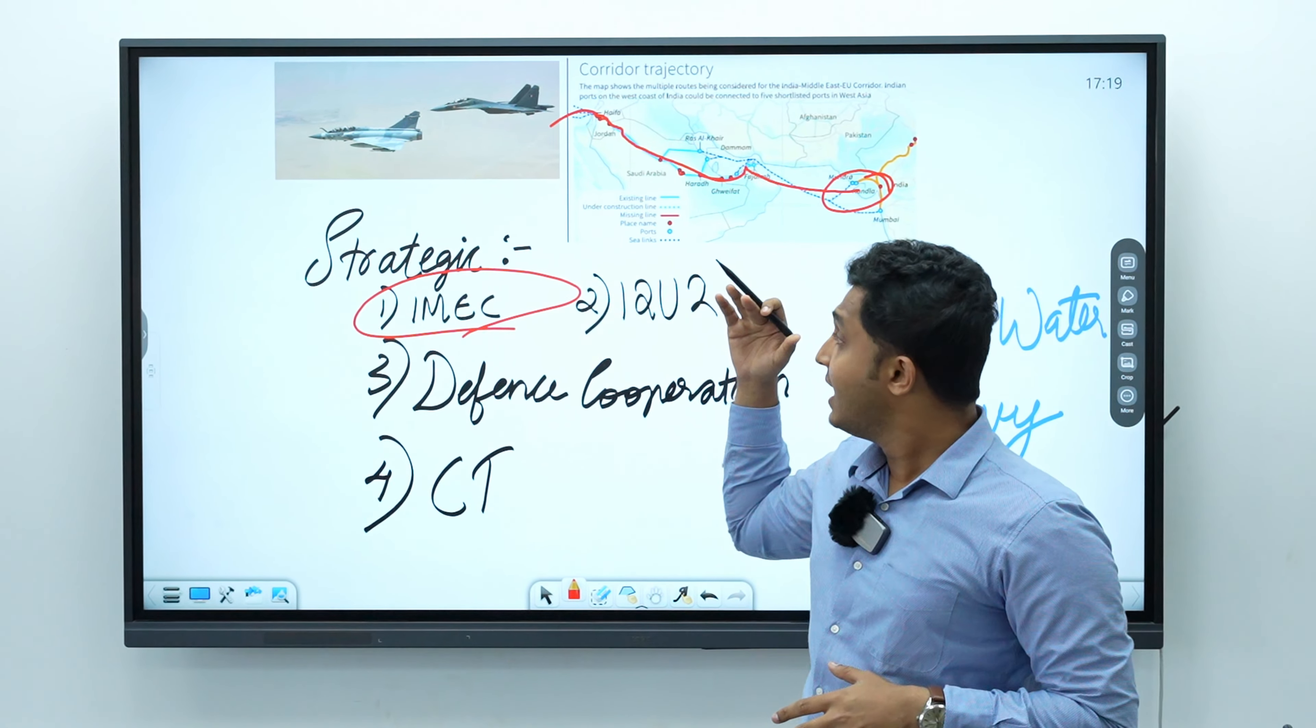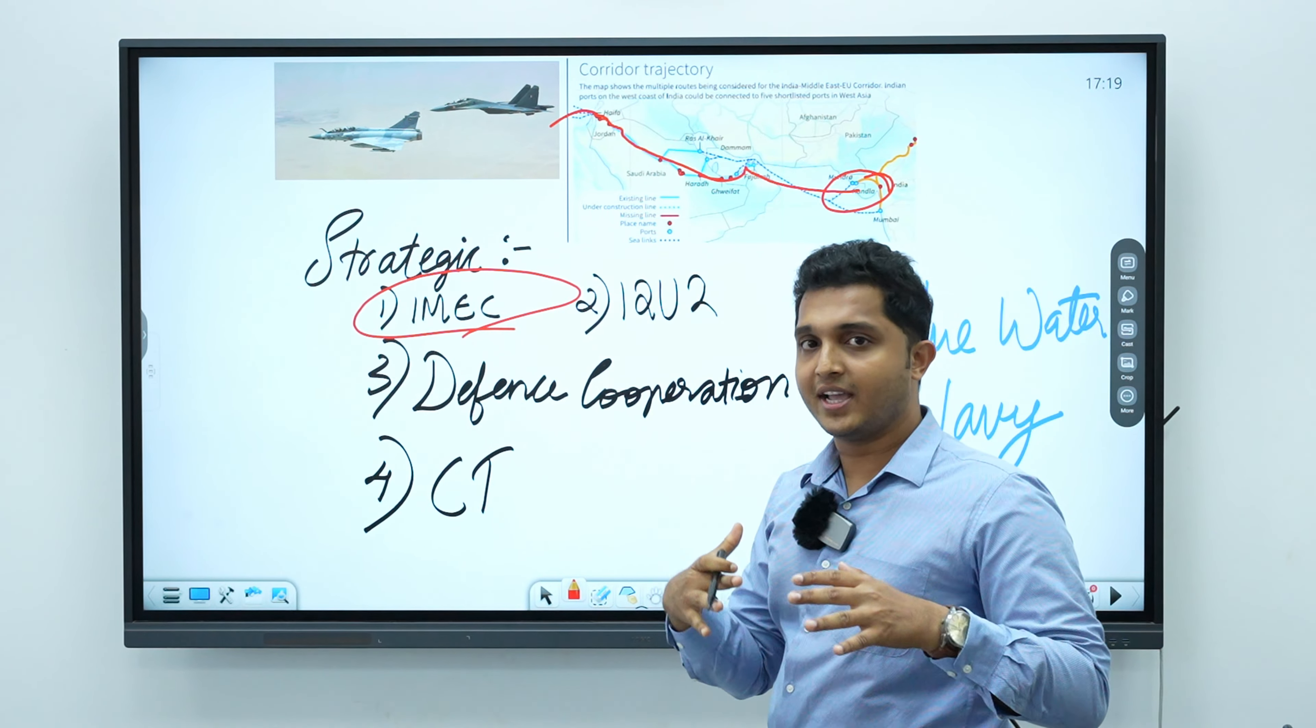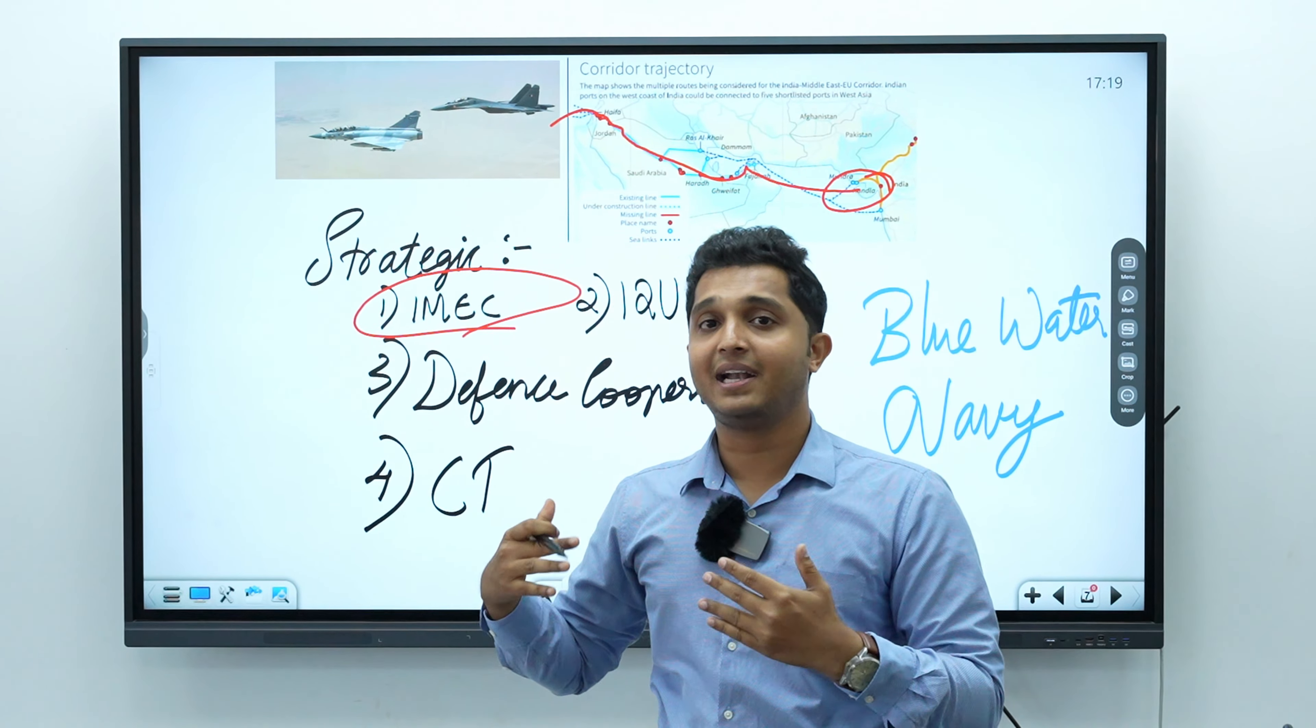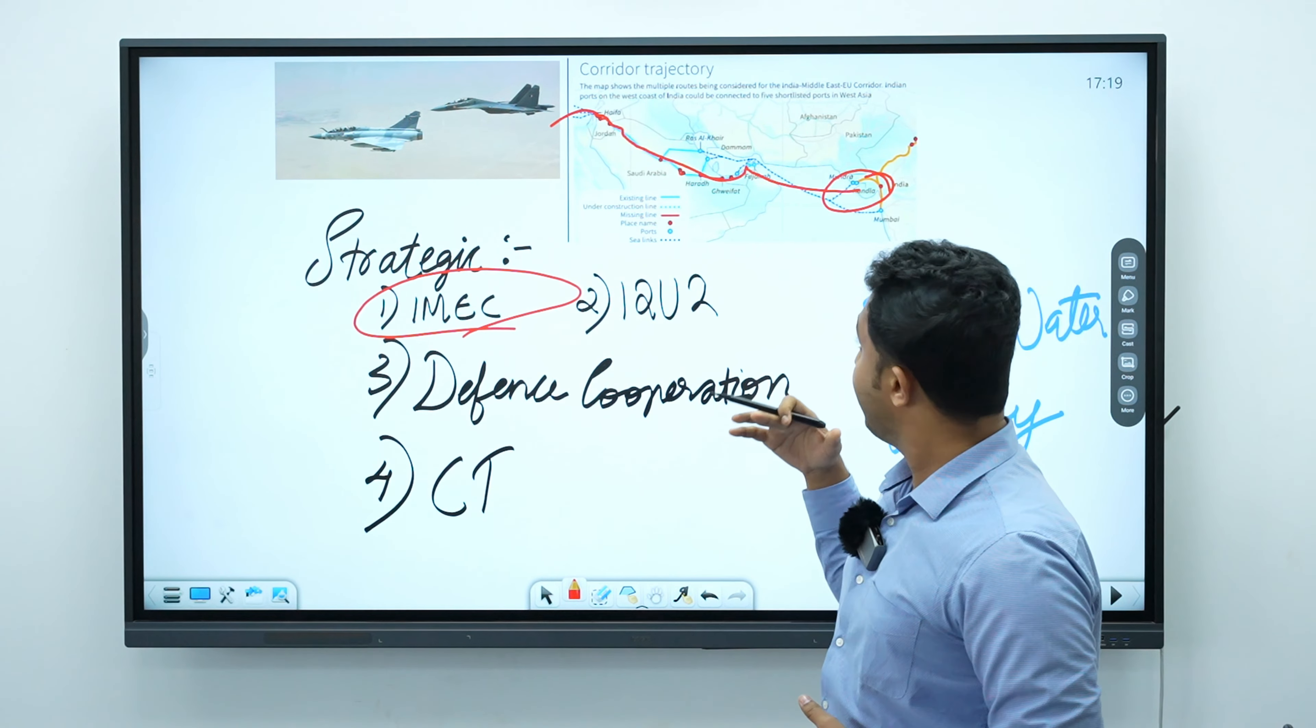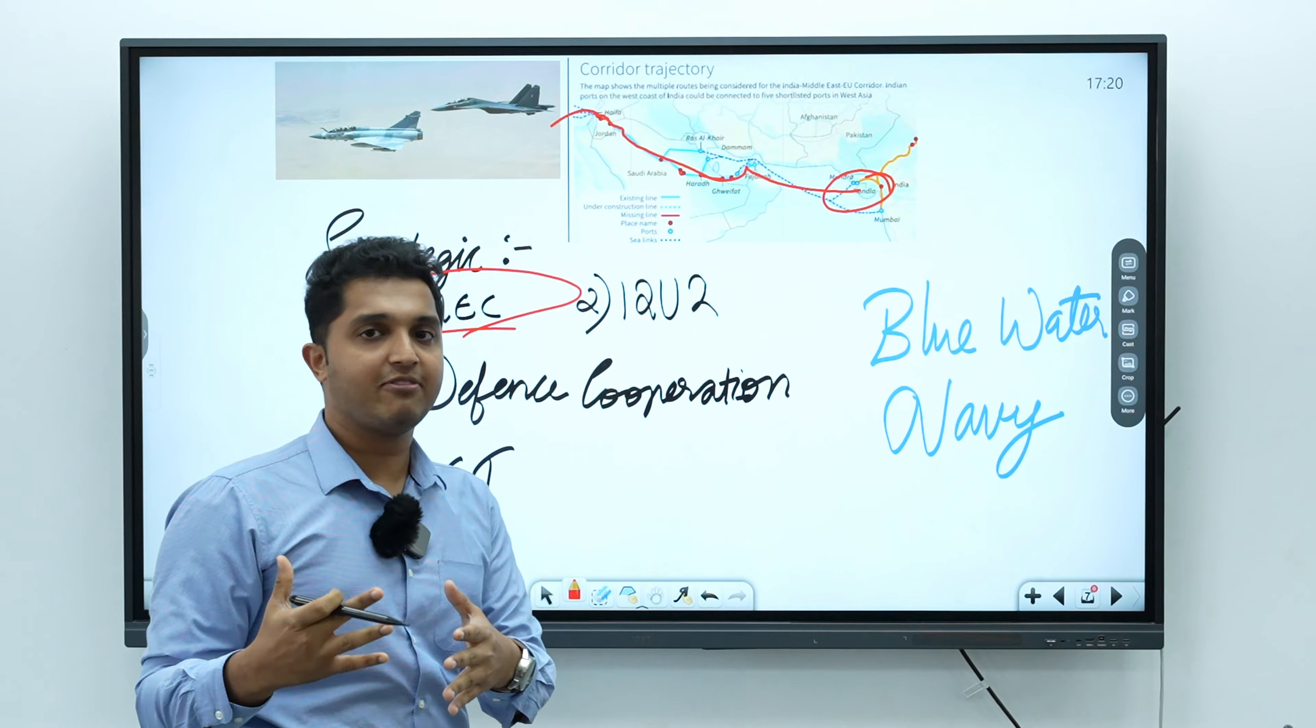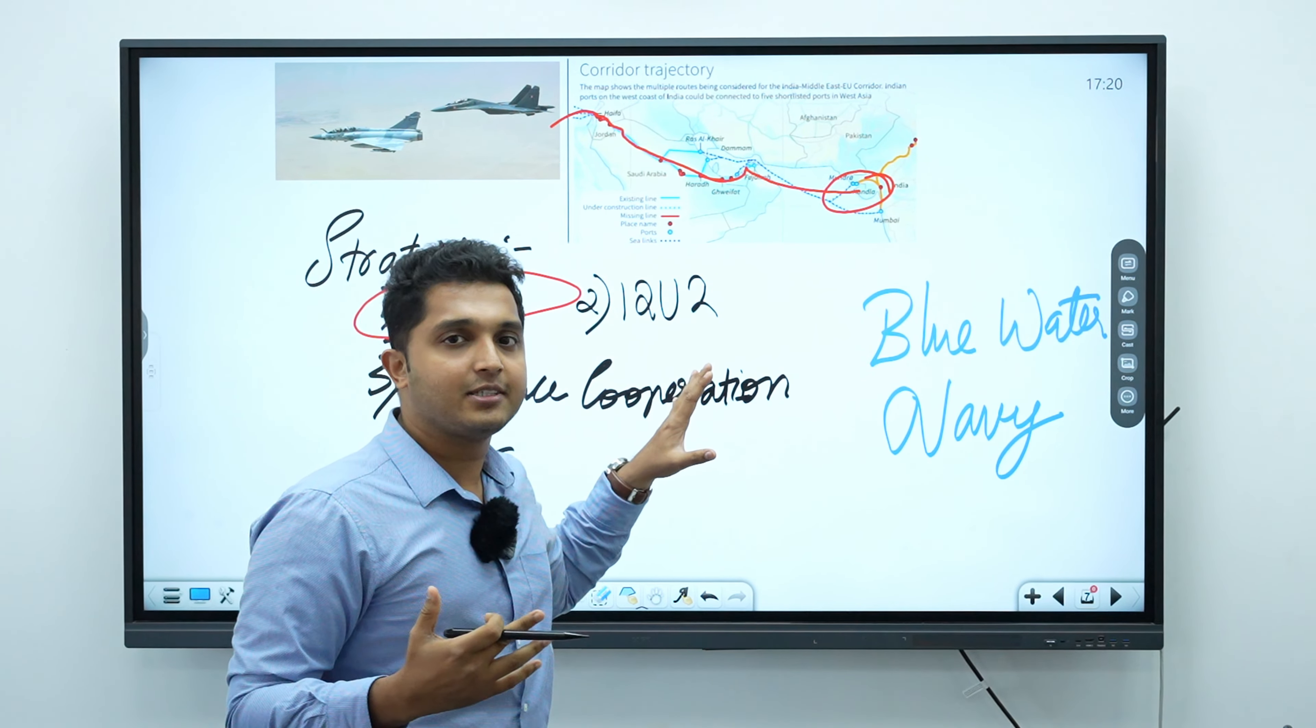Why this is important is because this is a counter against China's Belt and Road Initiative. There was an earlier plan for a different kind of program called the diamond necklace program against China, but now we are developing this as well.